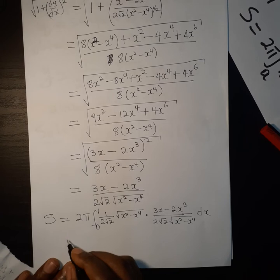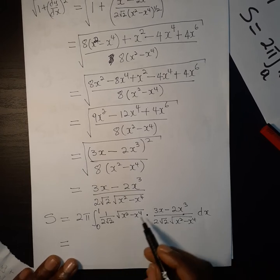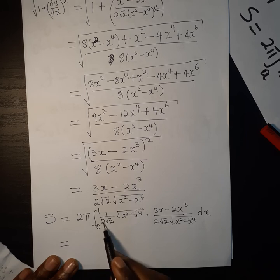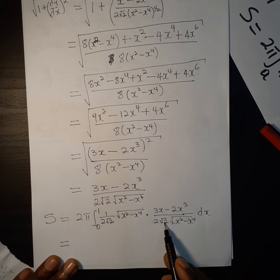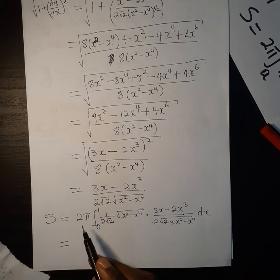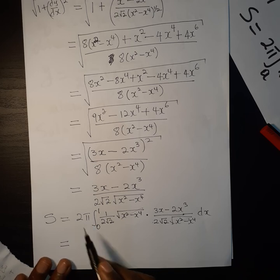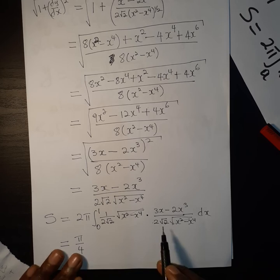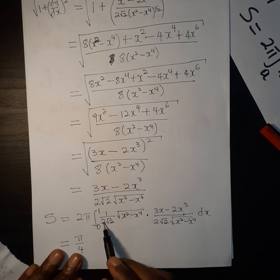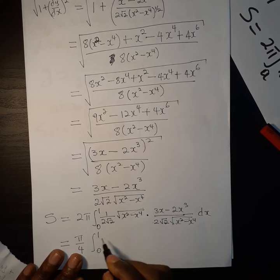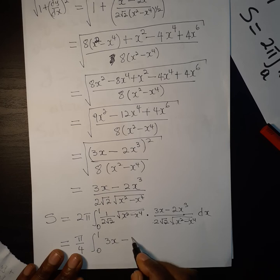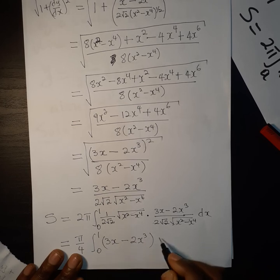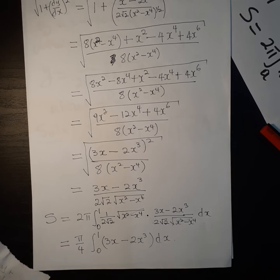The square root terms cancel. The denominator becomes 2 root 2 times 2 root 2 which is 8, and with 2π on top we end up with π over 4, times the integral from 0 to 1 of 3x minus 2x cubed, dx.